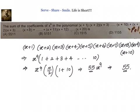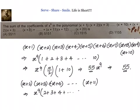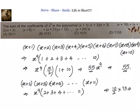Now let us go to the second term and apply the same logic. The second term of the given polynomial will start from x plus 2 and will be the product of x plus 2, x plus 3, x plus 4, like that, up to x plus 11. Applying the same logic, the x power 9 term will be x power 9 into 2 plus 3 plus 4 up to 11. The coefficient will be — there are again 10 terms — so 10 by 2 into first term plus last term, that is 10 by 2 into 2 plus 11, that is 13, which is equal to 65.